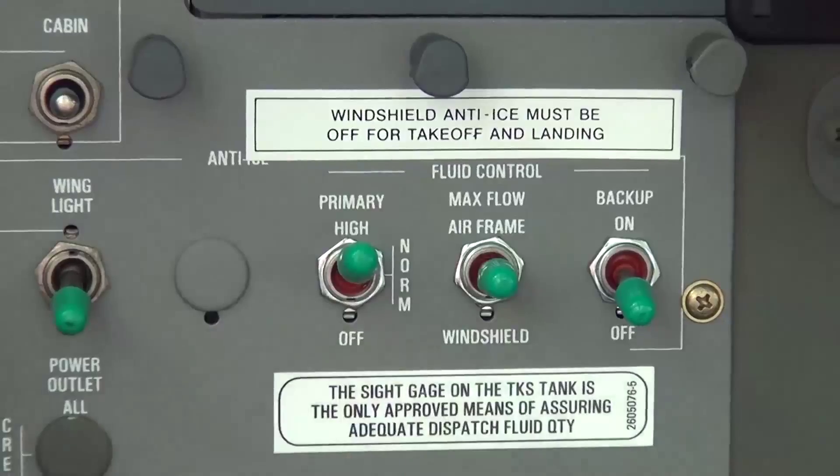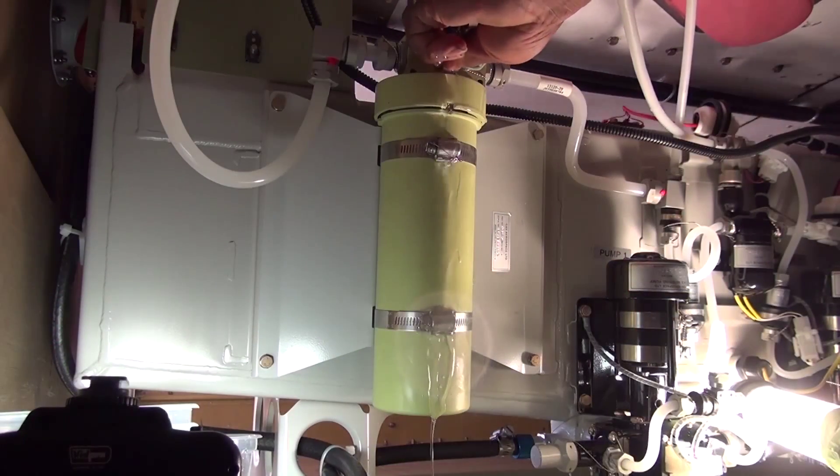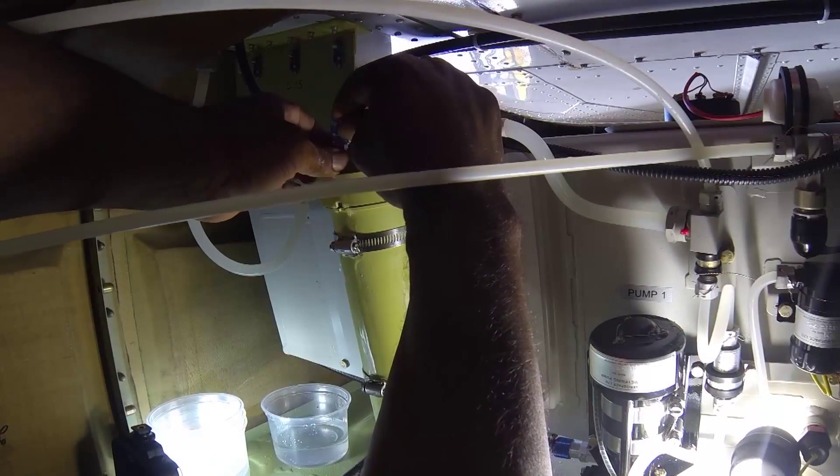Operate the system in high mode and examine the air bleed screw for leaks. If the air bleed screw leaks, carefully tighten the screw.